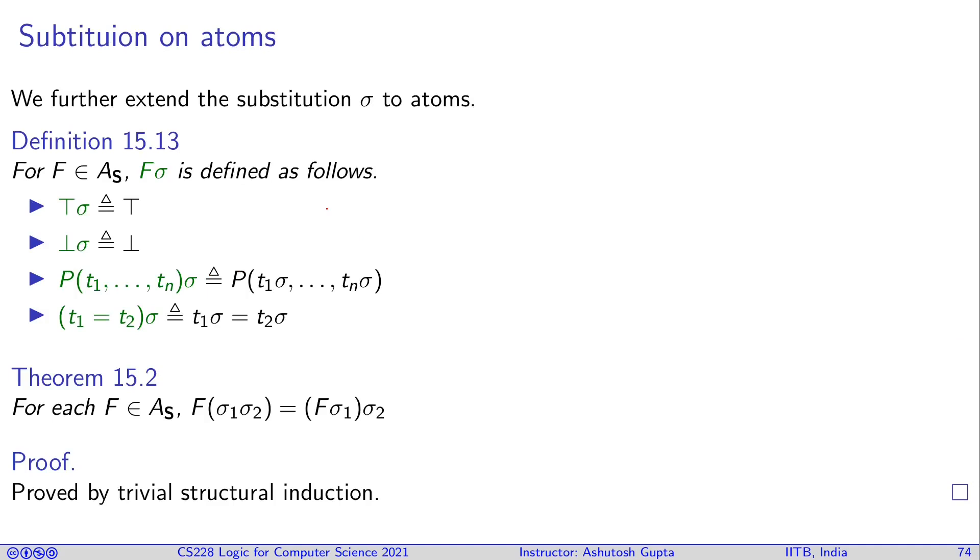Now let's look at substitution on atoms, how it works on atoms. First you have substitution of terms, will be written as F sigma. What are the cases? First, you have true, you apply substitution gives you true, same with false. And if you are building predicate, you have P(t1 to tn), you apply substitution on each of the terms and you build the whole predicate. Similarly, you have equality, which is also a binary predicate, you apply it to t1 and t2, you get the result. Following the previous theorem, you can say that composition also works in the case of atoms.